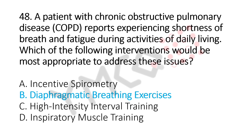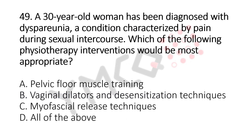Now let's move to question number 49. A 30-year-old woman has been diagnosed with dyspareunia, a condition characterized by pain during sexual intercourse. Which of the following physiotherapy interventions would be most appropriate? Option A, pelvic floor muscle training. Option B, vaginal dilators and desensitization techniques. Option C, myofascial release techniques. Option D, all of the above. And the answer is Option D, all of the above.